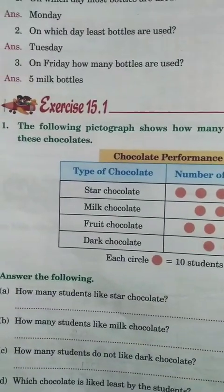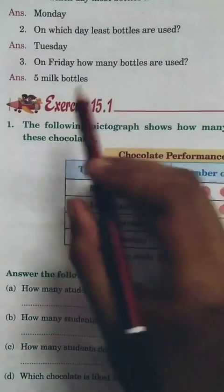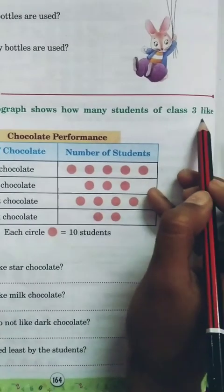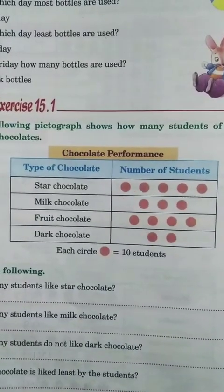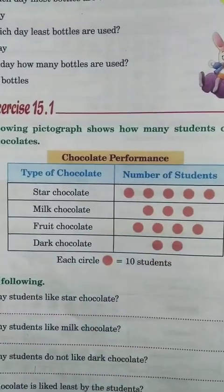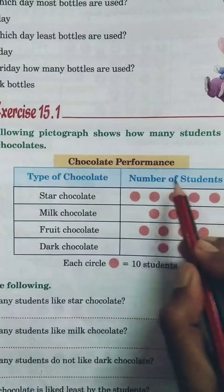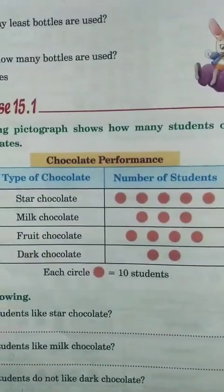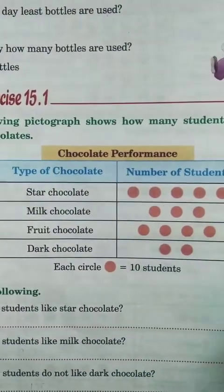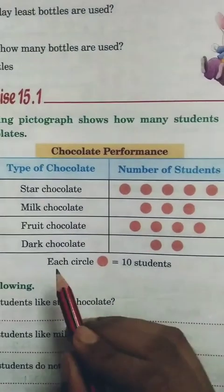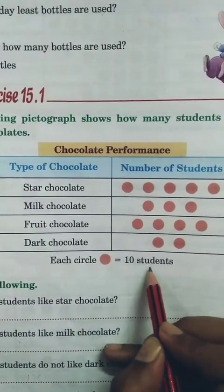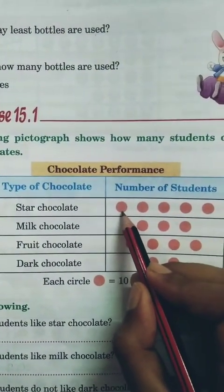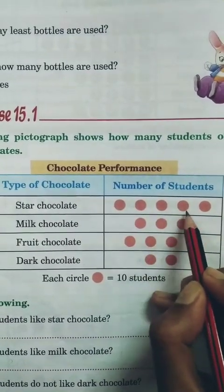Now let's see question number one from your book. The following pictograph shows how many students of class three like these chocolates. The title is 'Chocolate Preference.' Types of chocolates are: star chocolate, milk chocolate, fruit chocolate, and dark chocolate. Here each circle represents the number of students, and each circle stands for ten students — so one circle equals ten students.